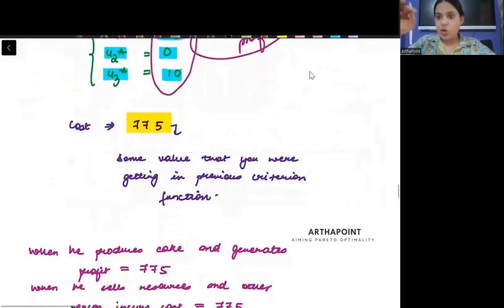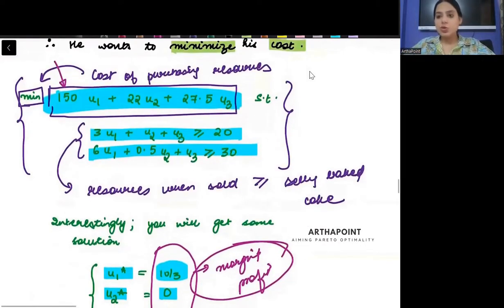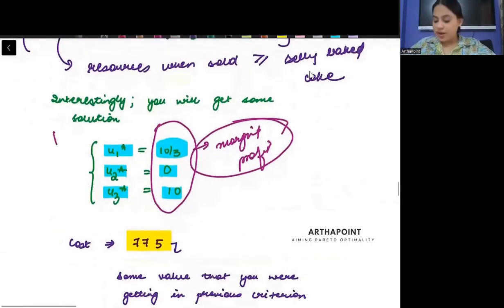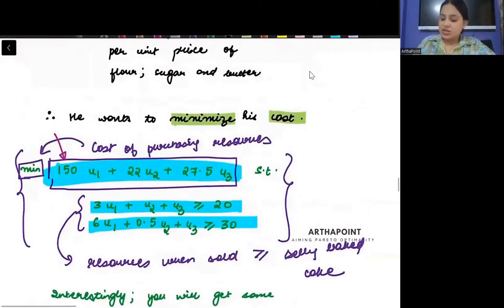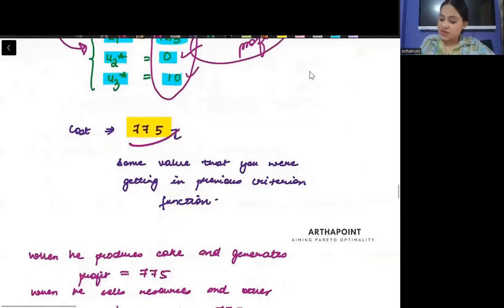And the cost that you will be getting here, when we have minimum cost at U1*, U2*, U3*, when you would have plugged these values 10/3, 0, and 10 back in this function, you will get the same answer that you were getting by maximizing the profit. The maximum profit you were getting was 775, and the minimum cost will also be 775.